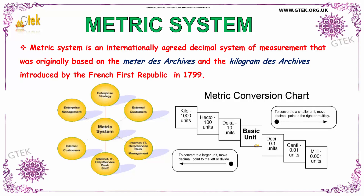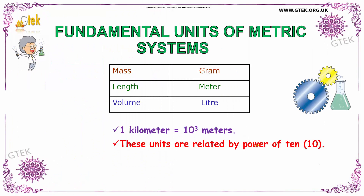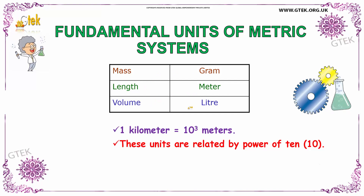Now we will talk about the metric system. The metric system is an internationally agreed decimal system of measurement that was originally based on the meter for calculating distance and the kilogram for calculating weight. It was established by the French First Republic in 1799. The fundamental units of the metric system are: mass in grams, length in meters, and volume in liters. For example, 1 kilometer equals 1000 meters. These units are related by powers of 10.